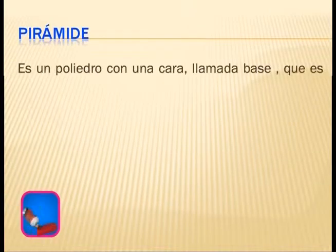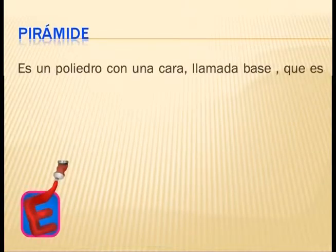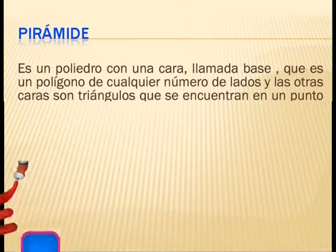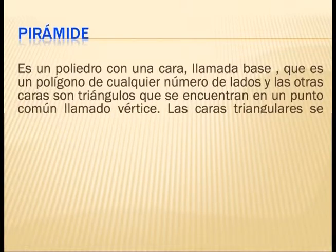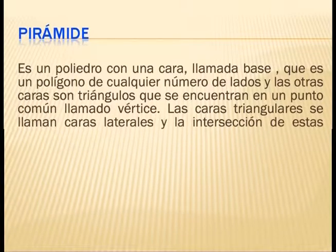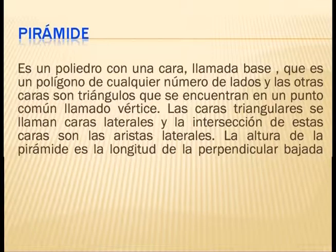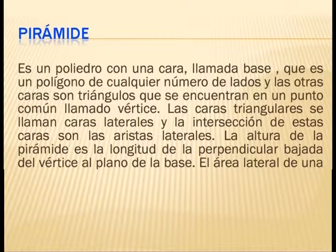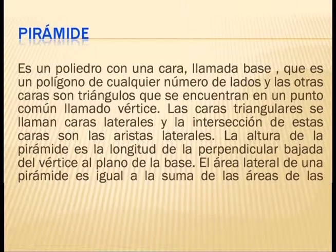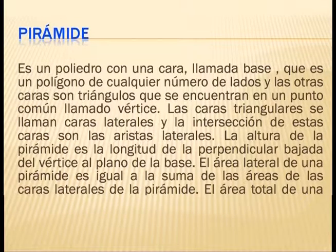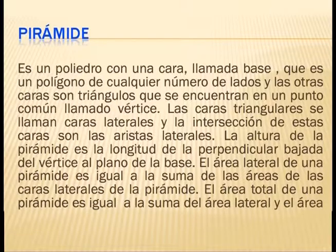Pirámide: es un poliedro con una cara llamada base, que es un polígono de cualquier número de lados, y las otras caras son triángulos que se encuentran en un punto común llamado vértice. Las caras triangulares se llaman caras laterales y la intersección de estas caras son las aristas laterales. La altura de la pirámide es la longitud de la perpendicular bajada del vértice al plano de la base. El área lateral es la suma de las áreas de las caras laterales; el área total es la suma del área lateral y el área de la base.